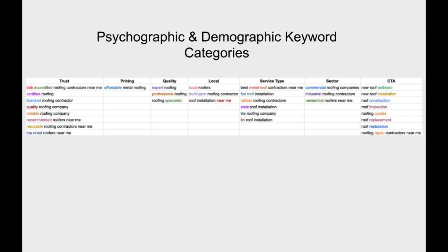Sector categories like commercial, industrial, and residential are important. Call to actions are basically the different types of services they could hire you for — repairs, replacements, or new installations. They'll probably be asking for next steps like an estimate, inspection, or a quote. Those terms might vary based on whether you're doing this for commercial or residential. For example, for a commercial roofing contractor, maybe you say 'get a quote' or 'get a bid' rather than 'get an estimate.' Knowing these terms and using them as your call to action is going to increase conversions and increase your relevancy.